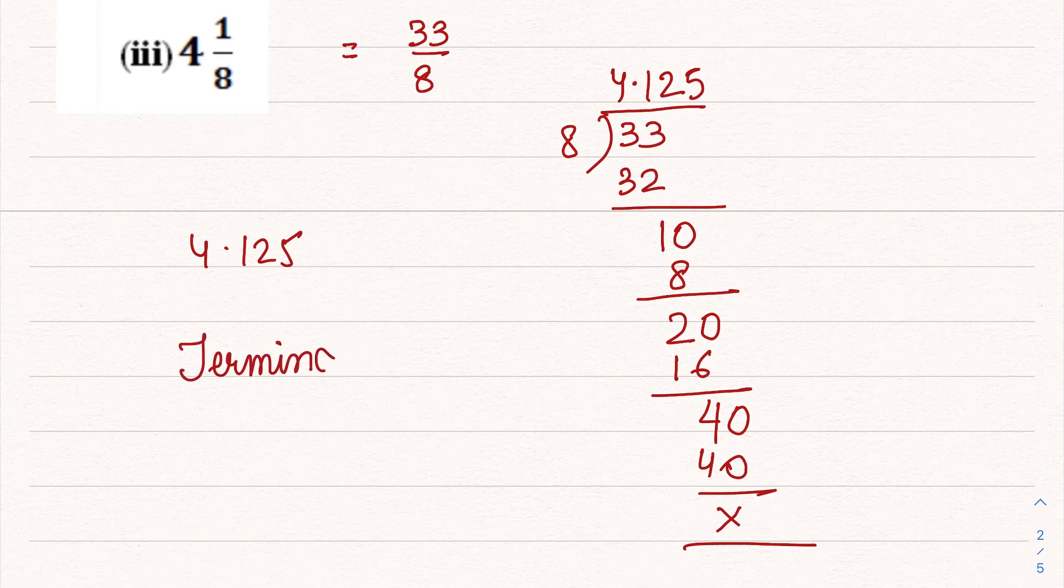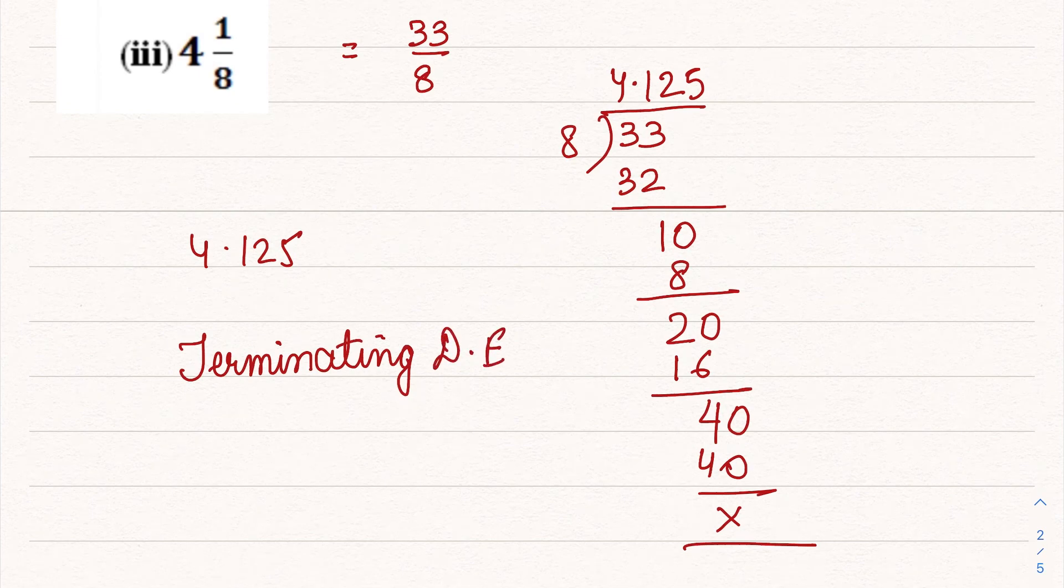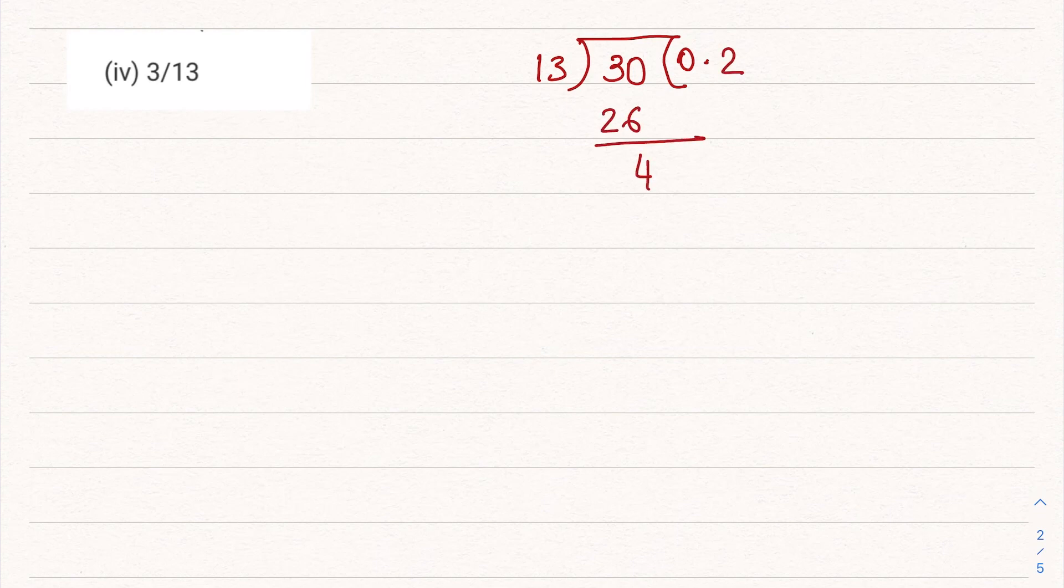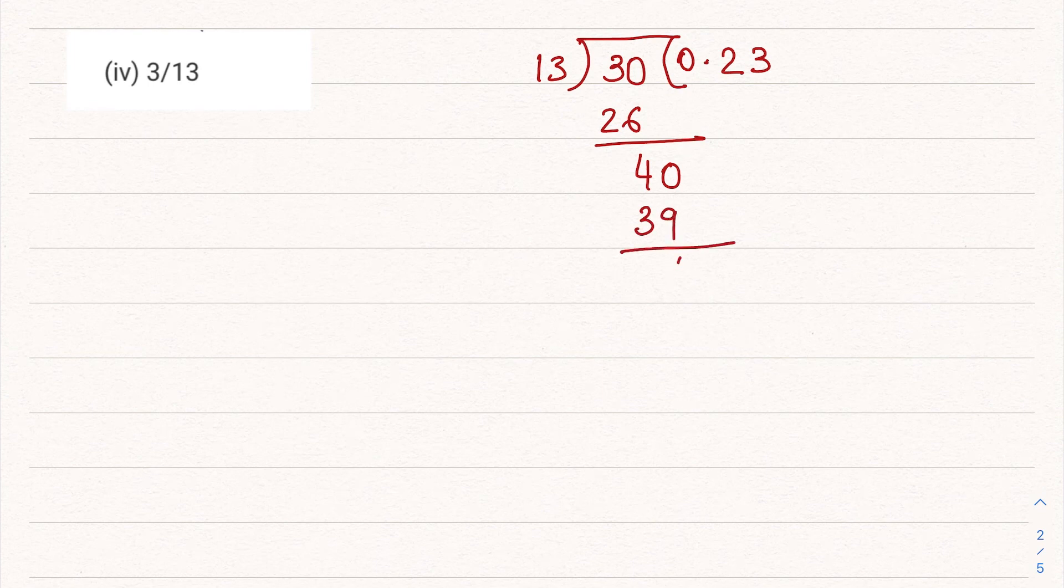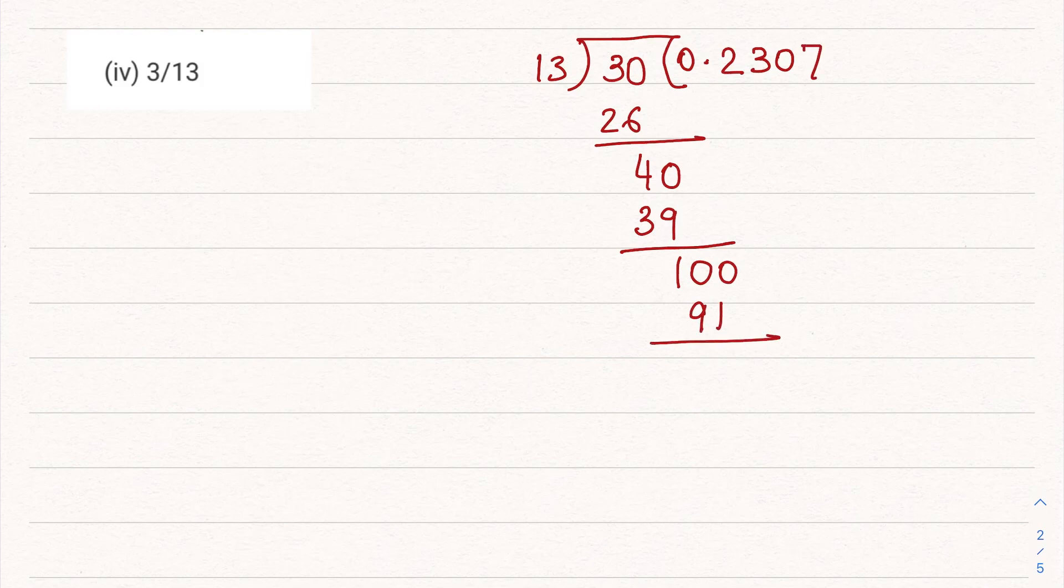Fourth part: 3 by 13. We'll first put the decimal because 3 is smaller than 13. We make it 30. Now 13 twos are 26, we're getting 4 as a remainder. We make it 40, 13 threes are 39. Now we are getting remainder as 1. We make it 10. Even 10 is smaller than 13, so we'll put a 0, making it 100. 13 sevens are 91, this time the remainder is coming 9. We'll put a 0.